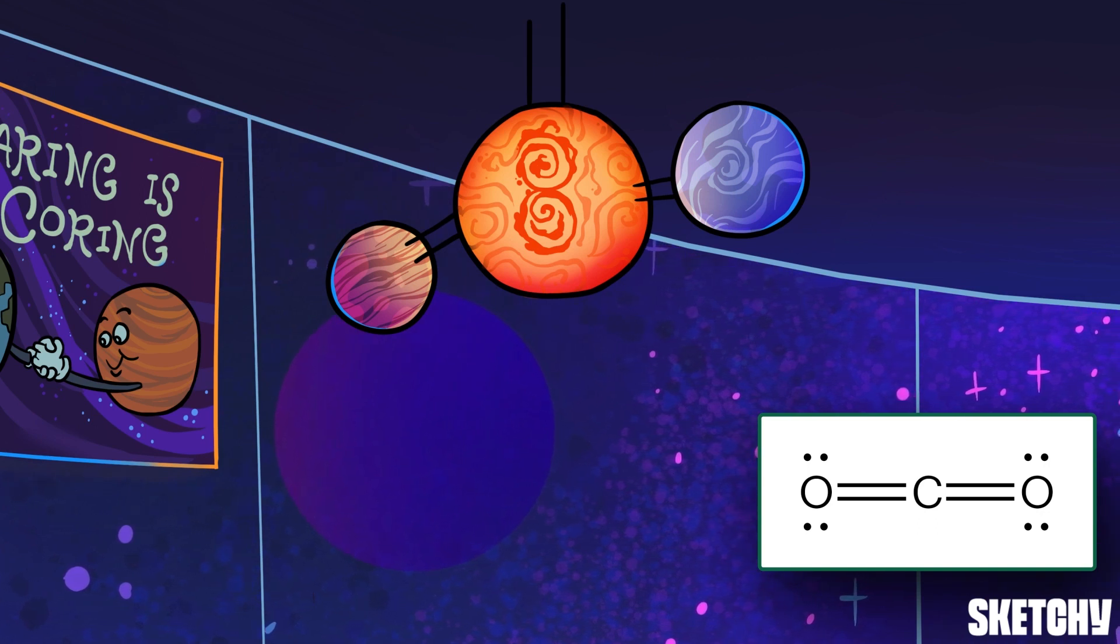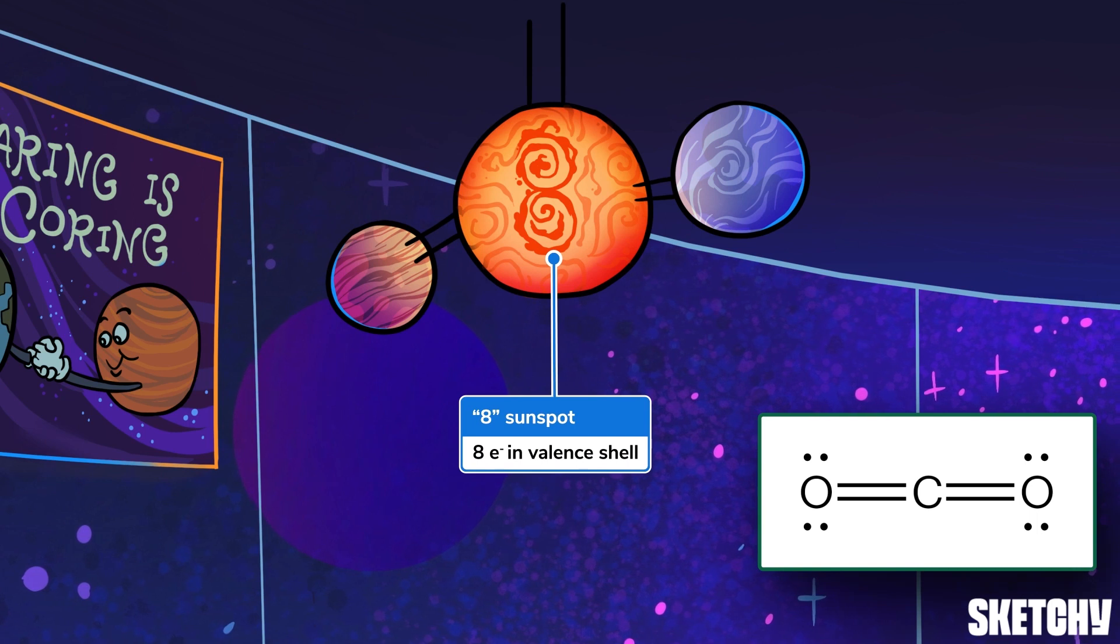Atoms are most stable and most happy when this shell is full. For most elements, that happens when their valence shell has eight electrons, which is why this sun is marked with that eight on its outer layer. There are some exceptions though, like hydrogen and helium, which are happy with just two electrons in their outer shell.